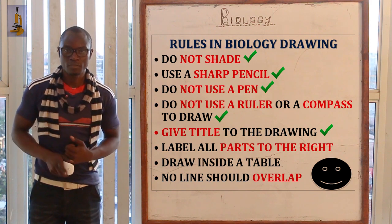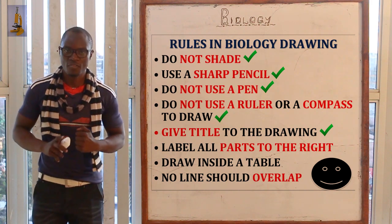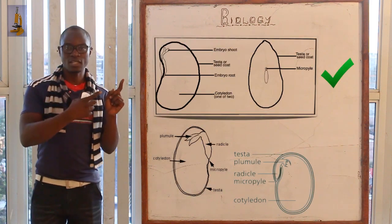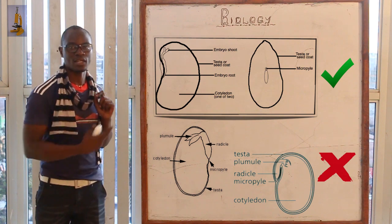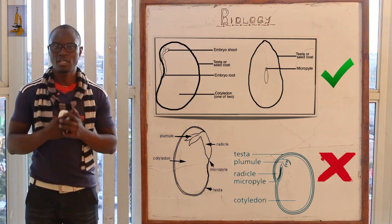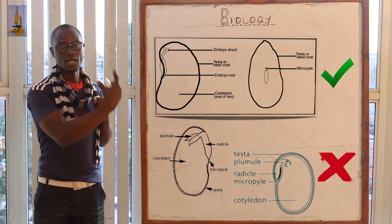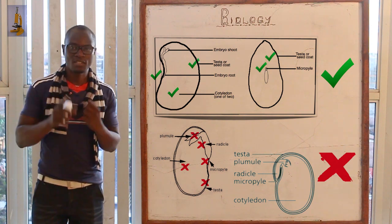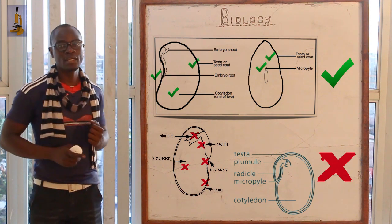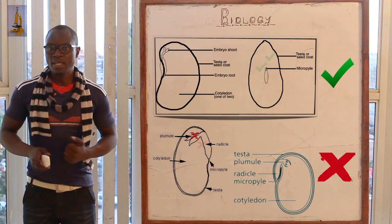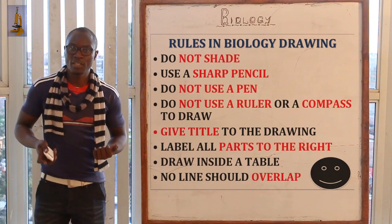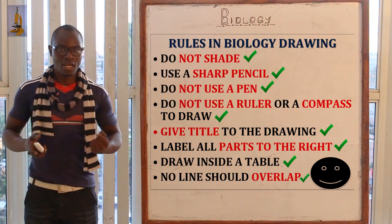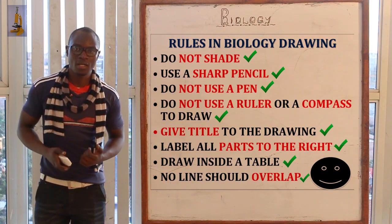After drawing your diagram, you must give it a title. When labeling in biology, all labels should be on the right side only — never label from all sides, as that would be wrong. Labels should not be arrows but straight lines touching exactly what is being labeled. Finally, the diagram must be placed inside a table. Those are the rules for biological diagrams.